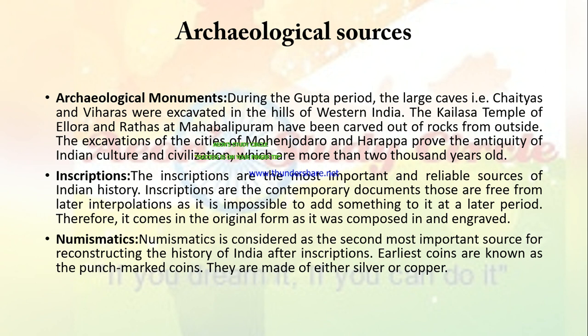The first is archaeological monuments. During the Gupta period, large caves — Chaityas and Viharas — were excavated in the hills of Western India. The Kailasa Temple of Ellora and Rathas of Mahabalipuram have been carved out of rock from outside. The excavation of the cities of Mohenjo-daro and Harappa prove the antiquity of Indian culture and civilization, which are more than 2000 to 1000 years old.